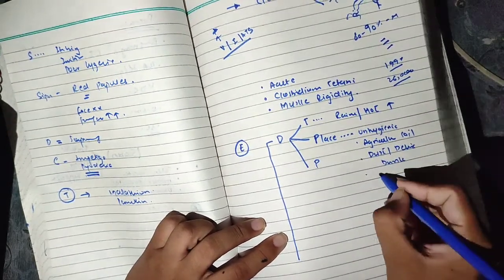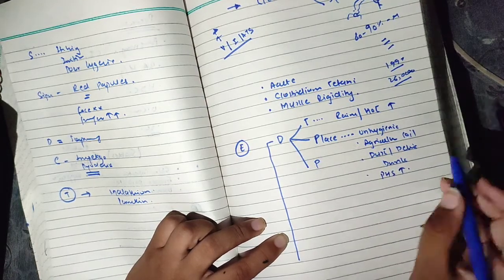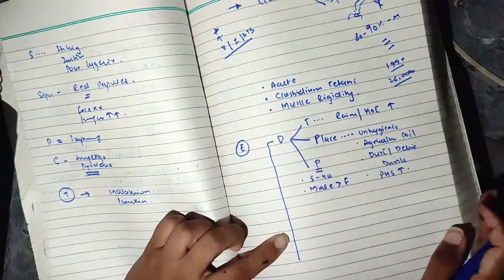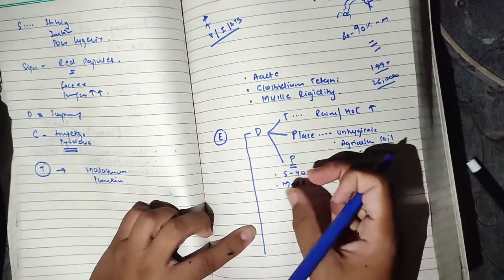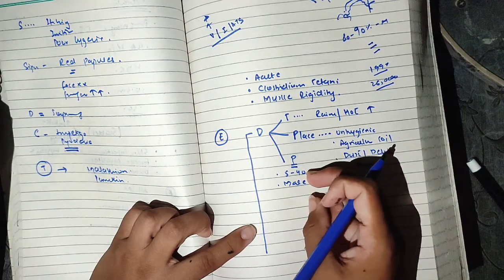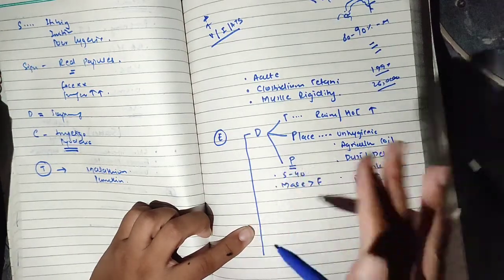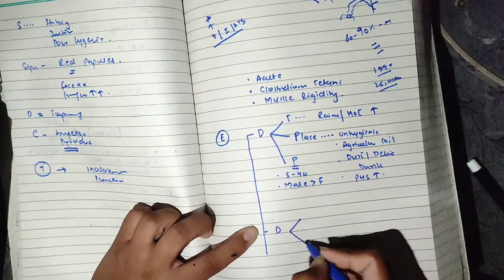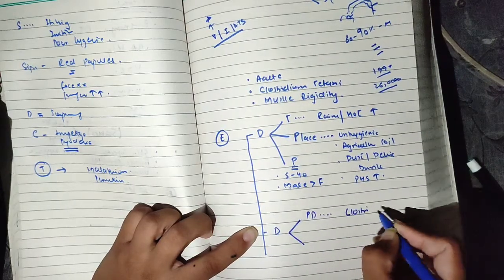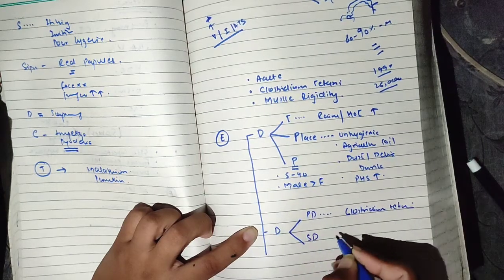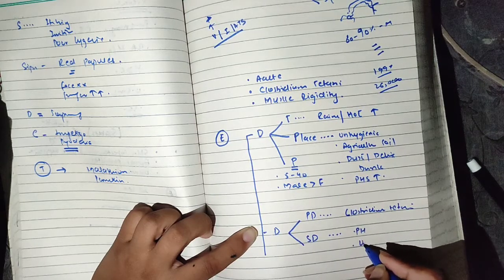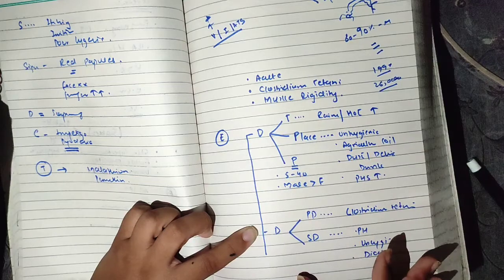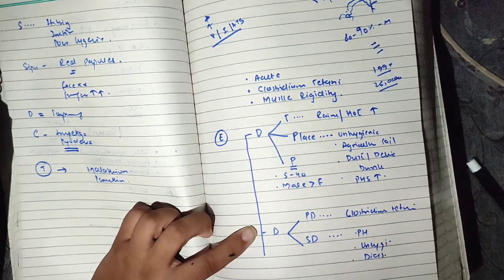If we talk about person-wise, every age group can be affected, but 5 to 40 years is most common. Males have more effect compared to females because males have more accidents. Occupation-wise, agriculture workers are at higher risk. Immunity doesn't develop naturally. Even after infection, immunity doesn't develop throughout life, only for a limited time. The primary determinant is Clostridium tetani. Secondary determinants include unhygienic conditions, unhygienic deliveries, untrained midwives when they cut the cord, and some cultural values.